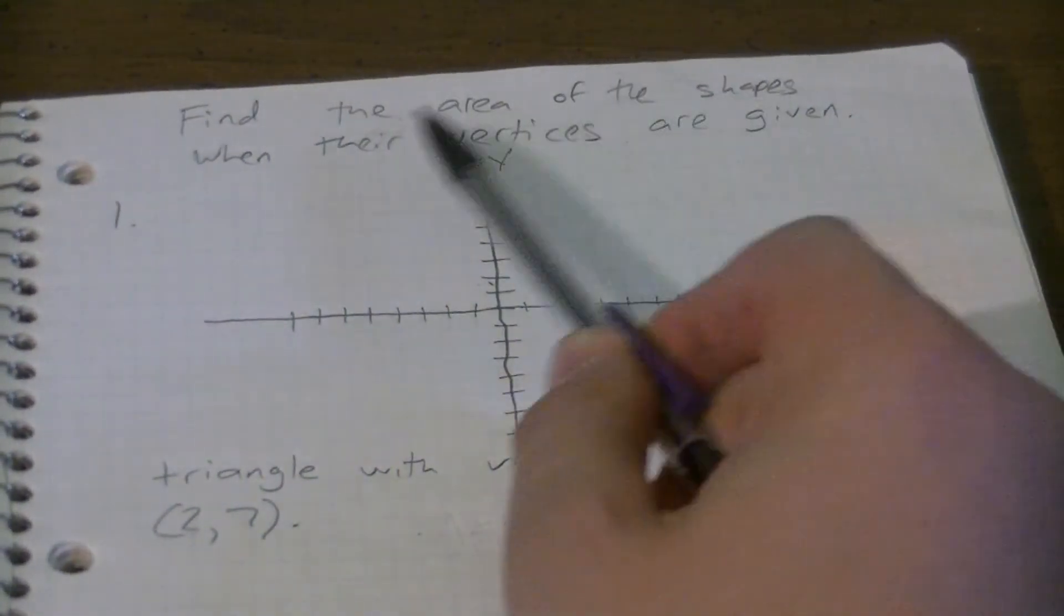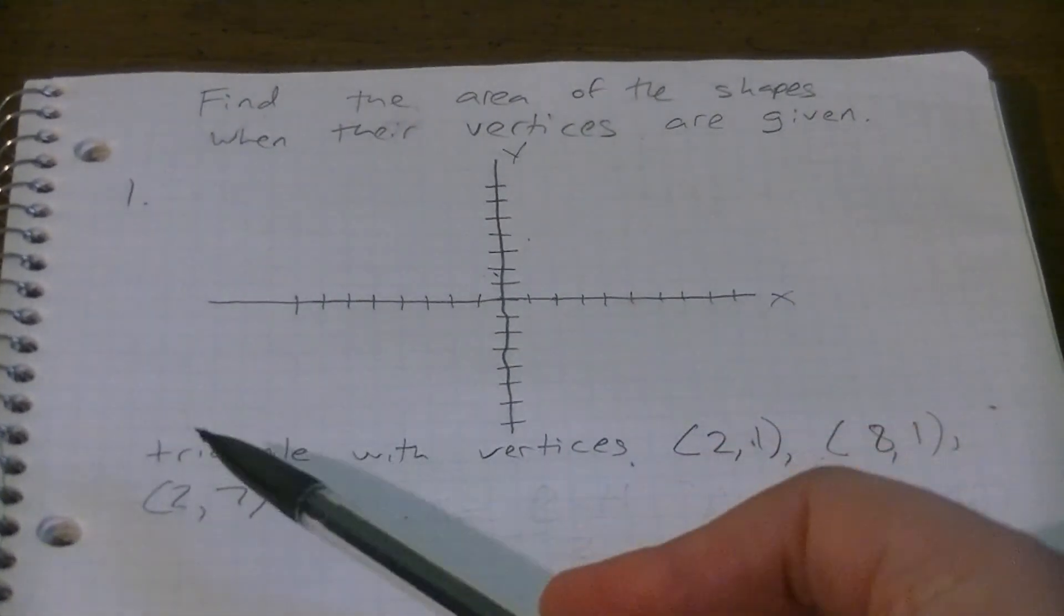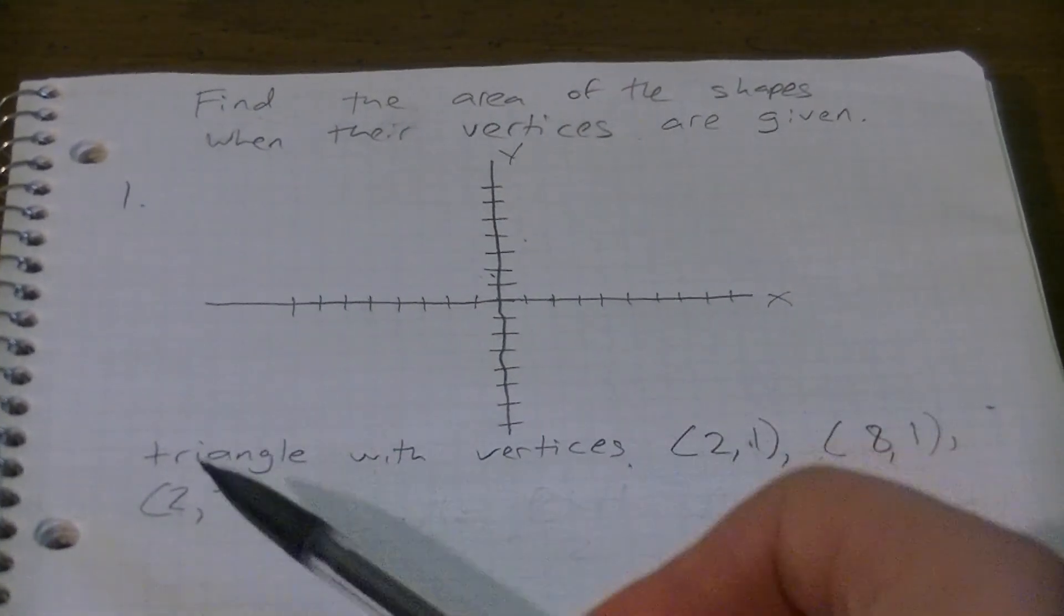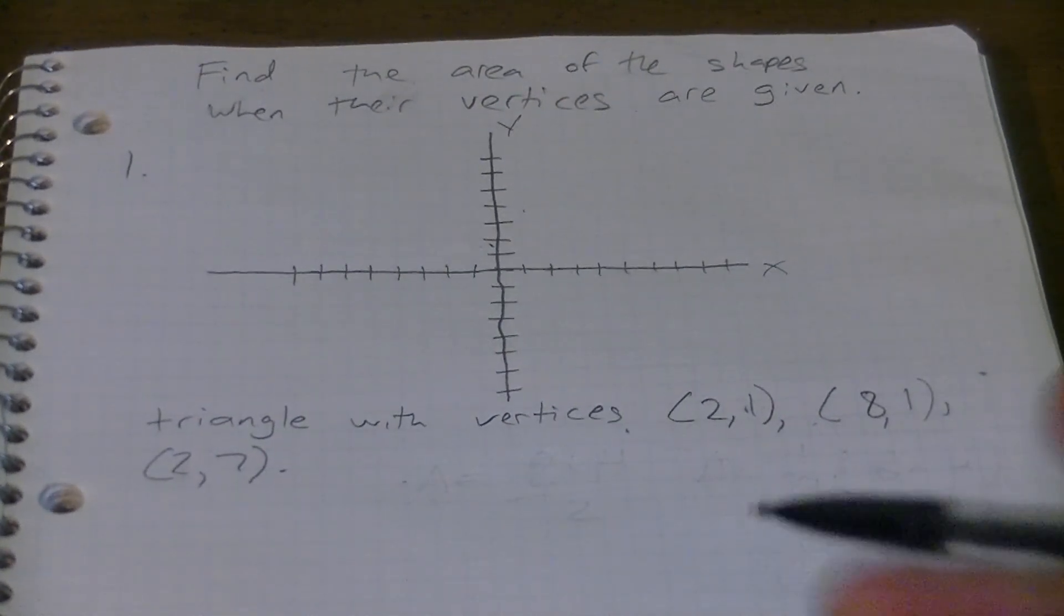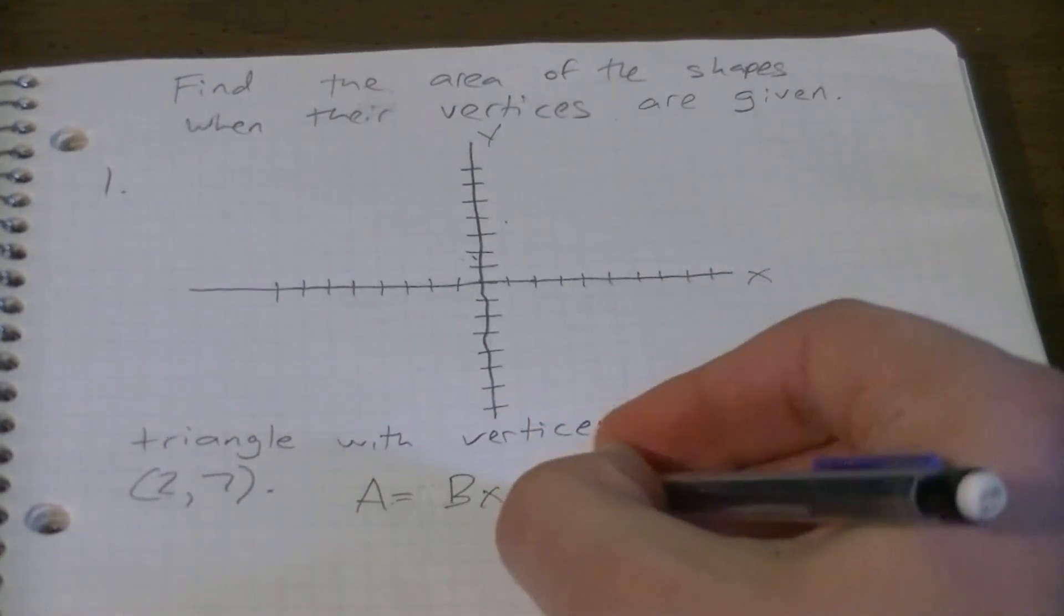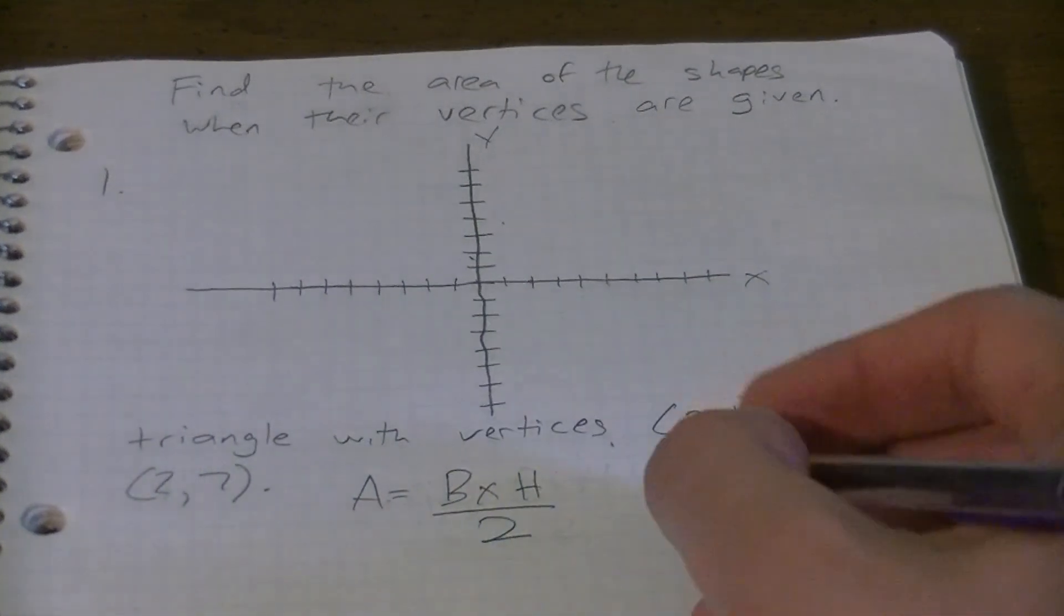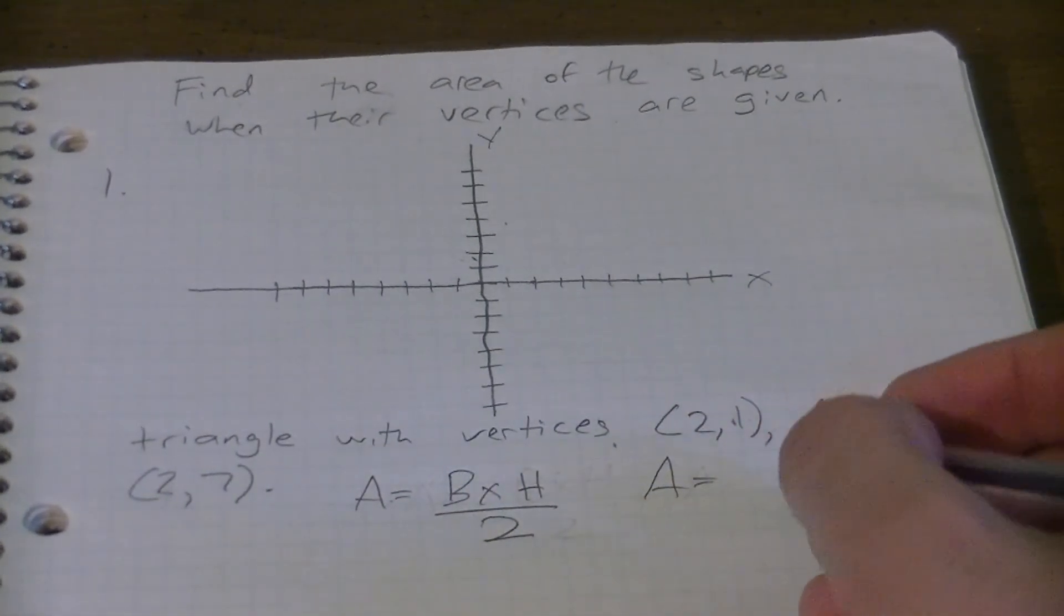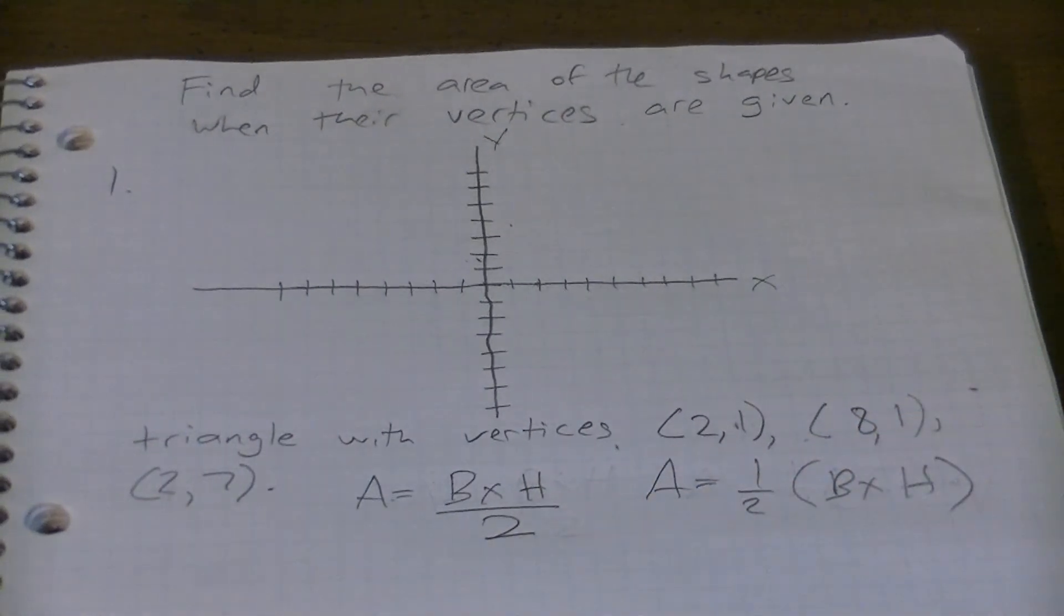Okay, let's find the area of the shapes when their vertices are given. Triangle with vertices (2,1), (8,1), (2,7). Now before we start plotting the points, what is the area of a triangle? Area equals base times height divided by two, or we can word it this way: area equals one-half base times height. Either way we can plug it in and we'll get the same results.